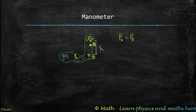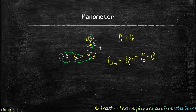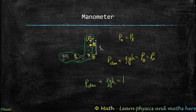From the manometer analysis: P_atm + ρgH = P(B) = P(A). Since P(A) is also equal to the gas pressure, we finally get: P_gas = P_atm + ρgH.